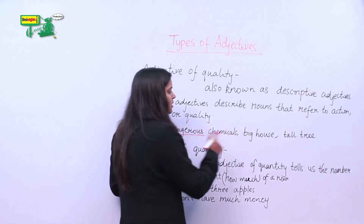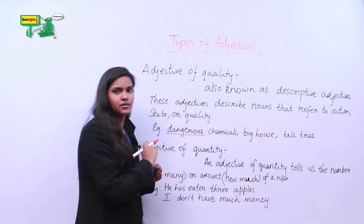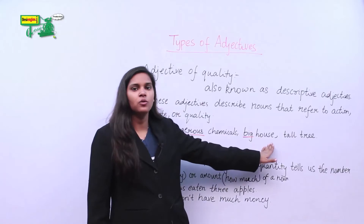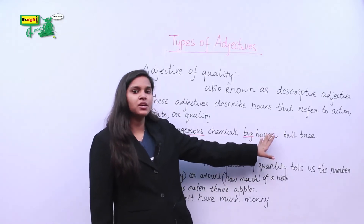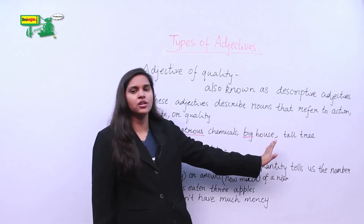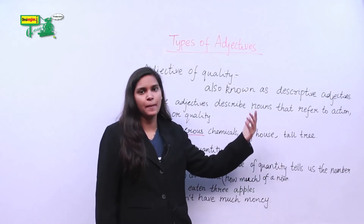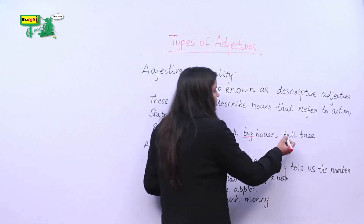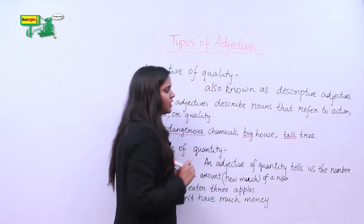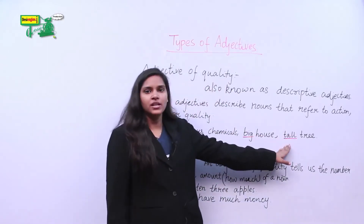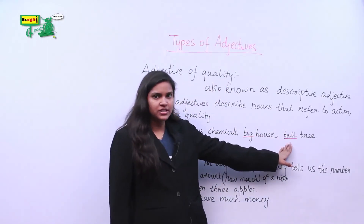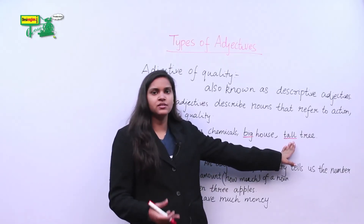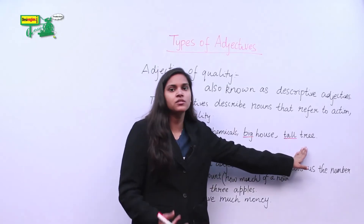Let's take another example: big house. The word big modifies my noun house — it gives me additional information about house, that it is big. Let's take another example: tall tree. Here, tall is my adjective of quality because it gives some additional information, that is, a quality about the tree.